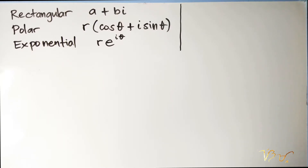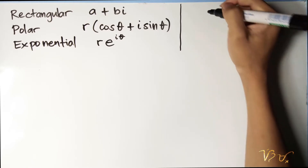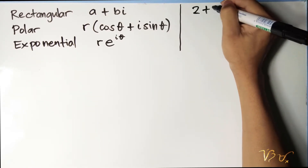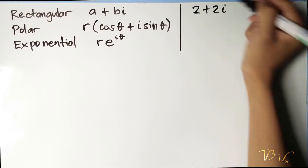We already know the 3 forms of our complex number, namely rectangular, polar, and exponential forms. But how do we transform a rectangular form complex number into its corresponding polar and exponential forms? Let's have this example: 2 plus 2i.